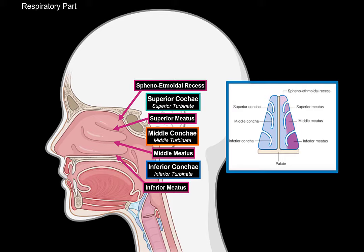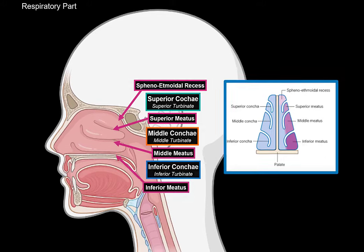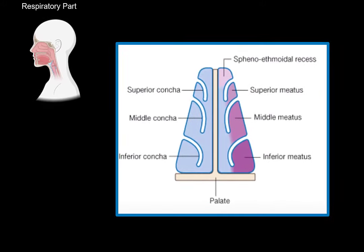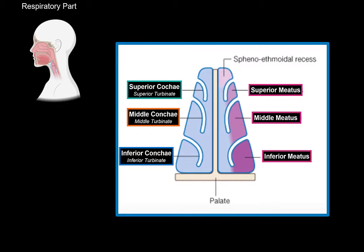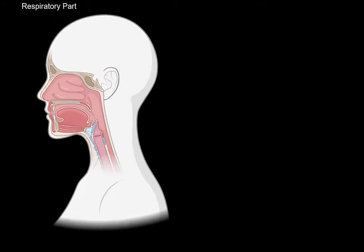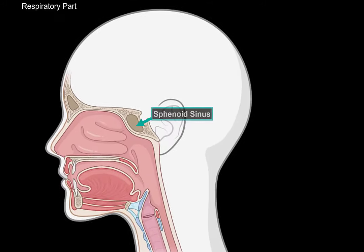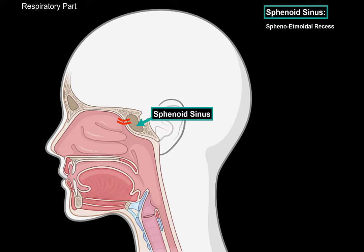Here's an anterior view of the nasal cavity, just to give you a different view of these structures: the superior conchae, the middle conchae, and the inferior conchae, with the superior meatus, middle meatus, and inferior meatus in between. At the top, you'll find the sphenoethmoidal recess. Now, why is this relevant? Well, here's one of the sinuses we have — the sphenoid sinus. It has a tube that opens straight into the sphenoethmoidal recess.